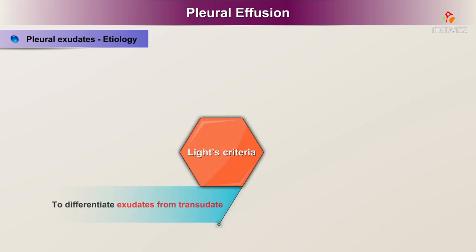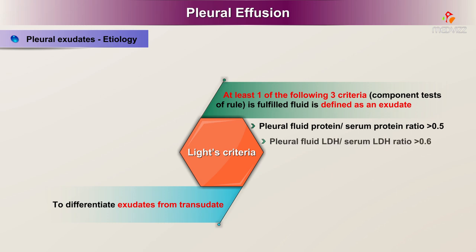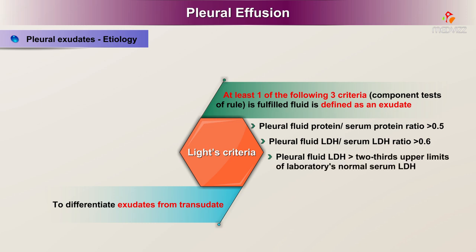Light's criteria to differentiate exudates from transudates: according to the traditional Light's criteria, if at least one of the following three criteria is fulfilled, the fluid is defined as an exudate. These are: pleural fluid protein to serum protein ratio greater than 0.5; pleural fluid LDH to serum LDH ratio greater than 0.6; or pleural fluid LDH greater than two-thirds the upper limits of the laboratory's normal serum LDH.